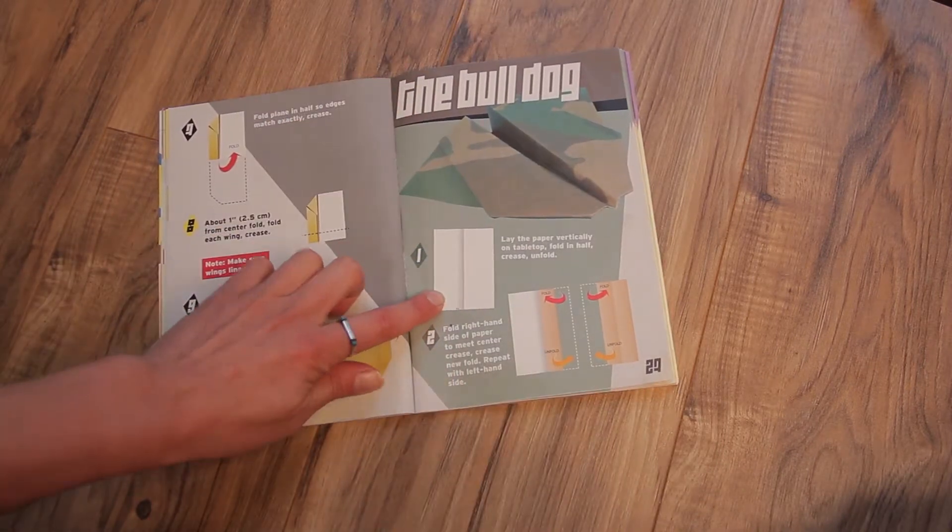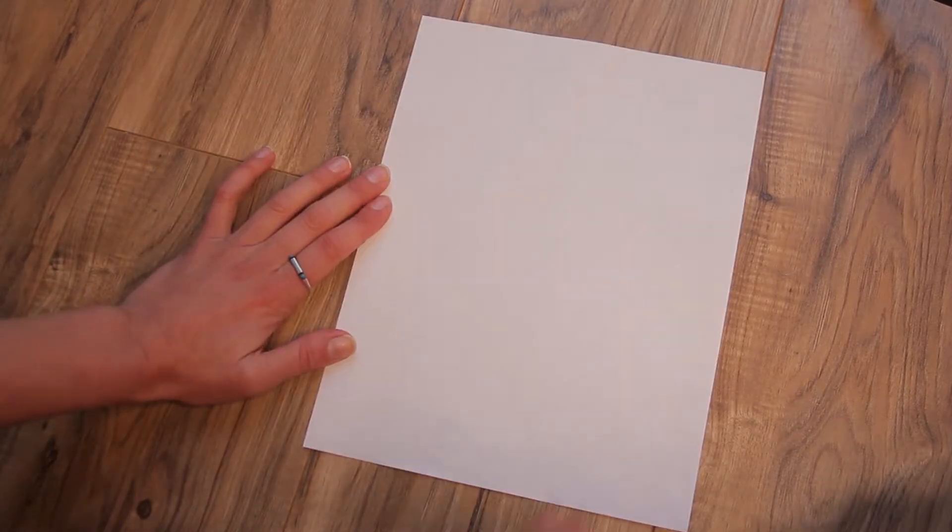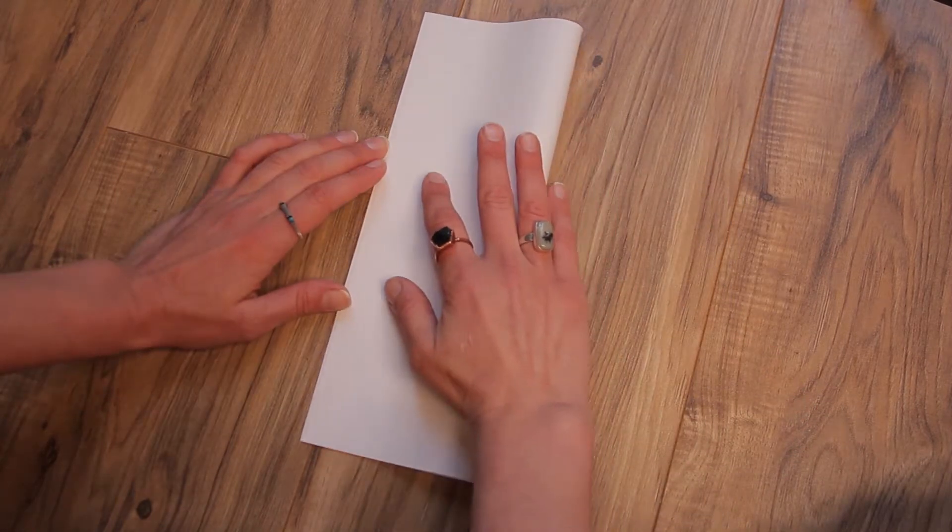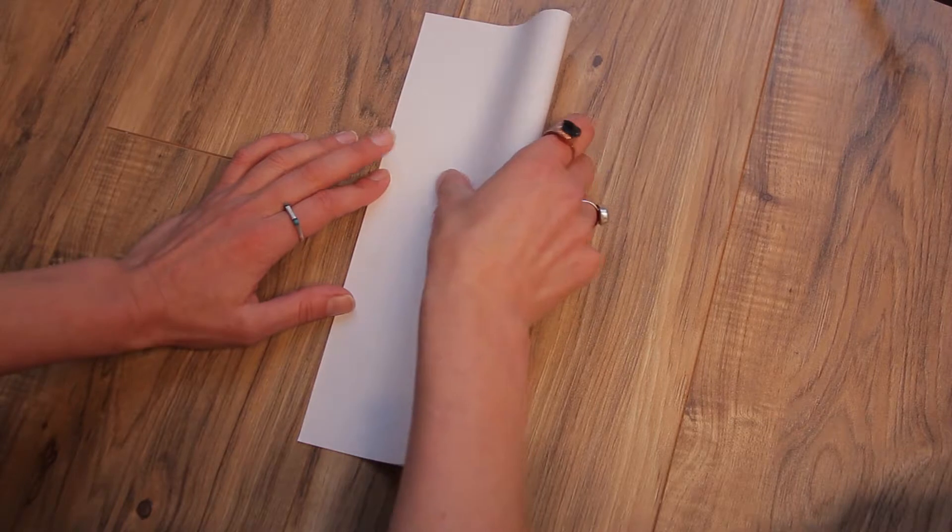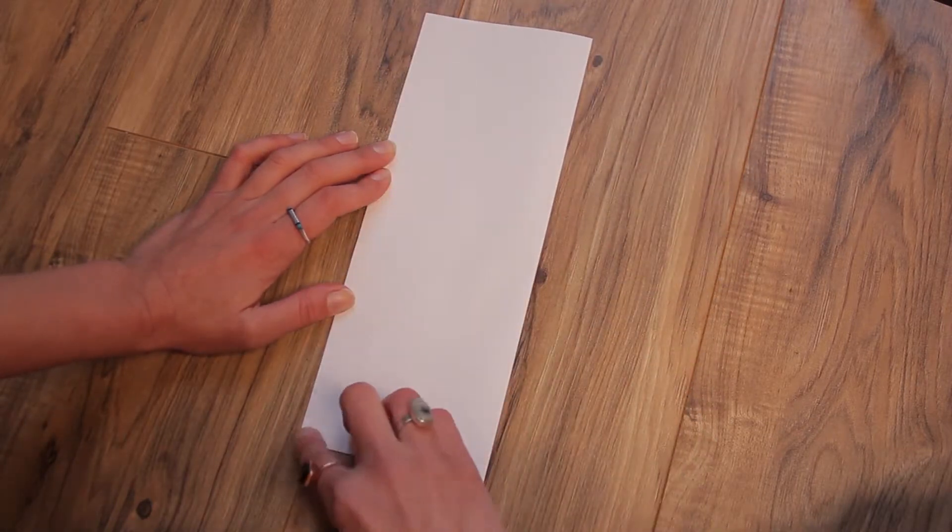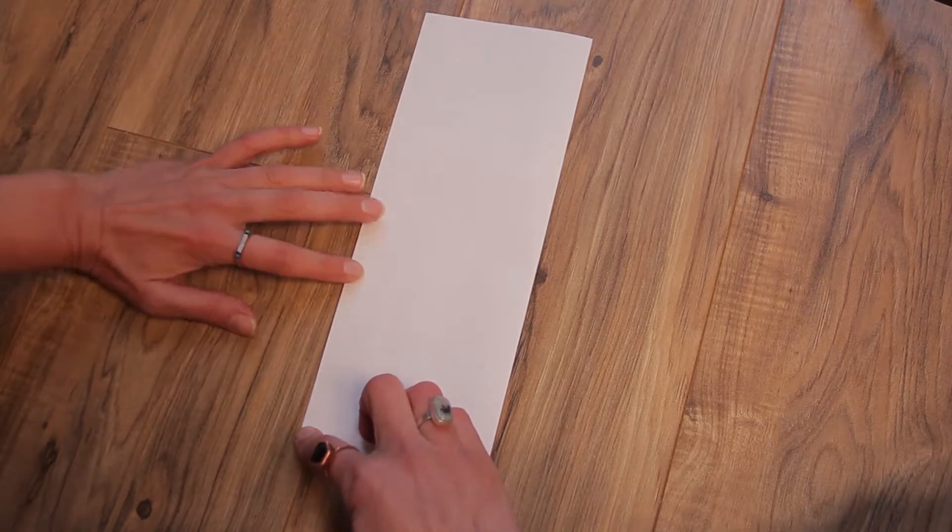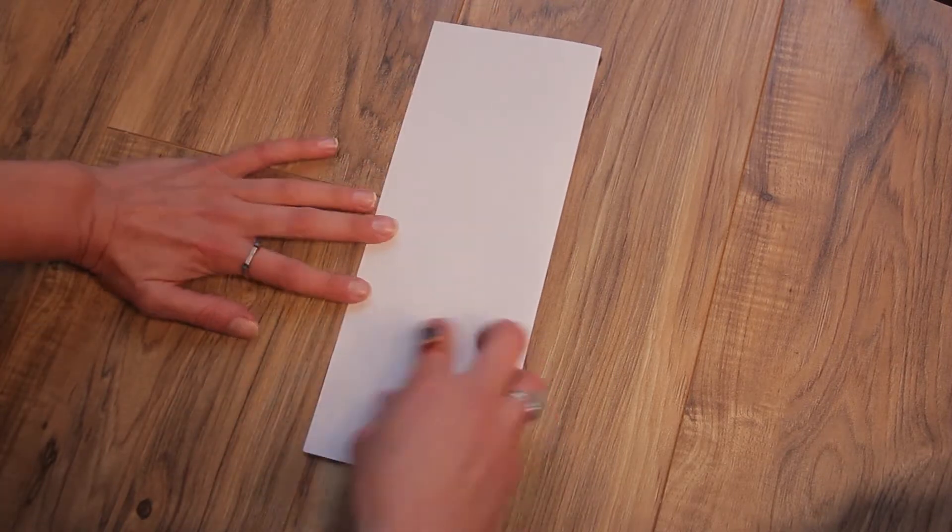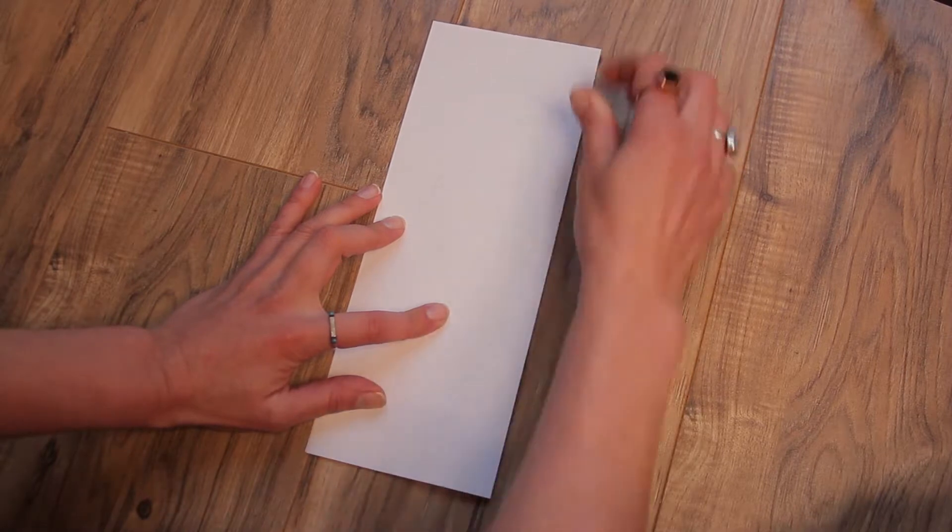First step is pretty simple, it's just folding the paper in half. If you're young and new to folding paper, make sure that you line up your corners and the sides so that it's not overlapping, so it's nice and flat. Really make sure that your creases are tight.